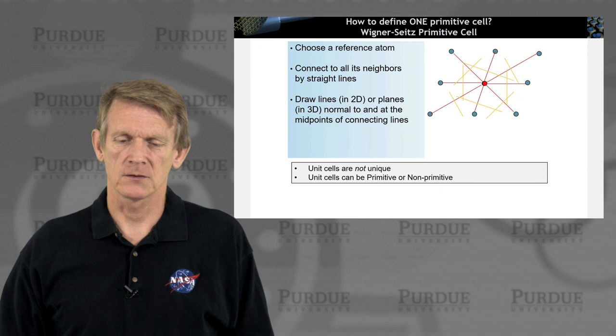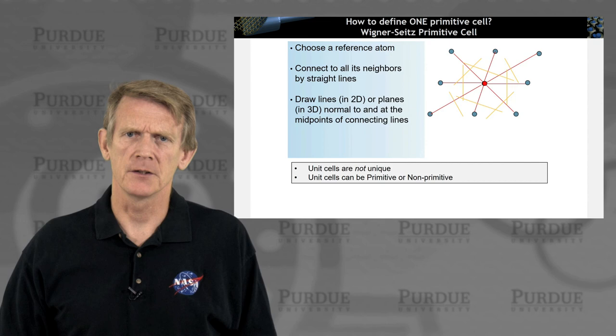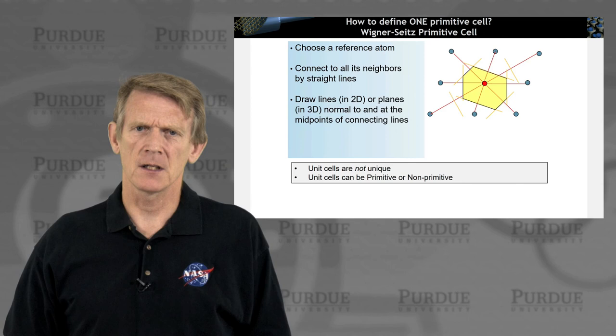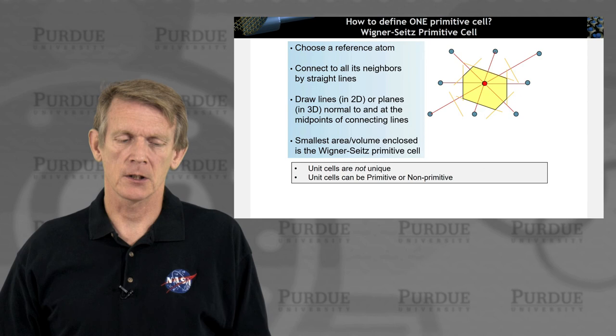Then you bisect any of these lines with another orthonormal line. So you draw, through each bonding direction, you draw a line like this, bisection. And as you do that, you enclose a surface in 2D, and in 3D you enclose a volume. And that inner surface, or the inner volume, is the primitive cell that you constructed through this recipe.